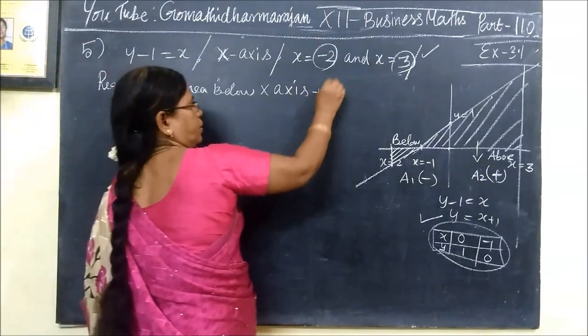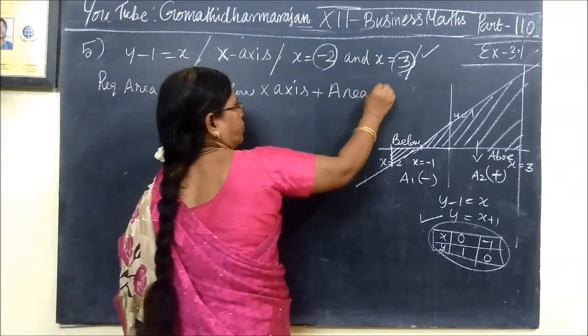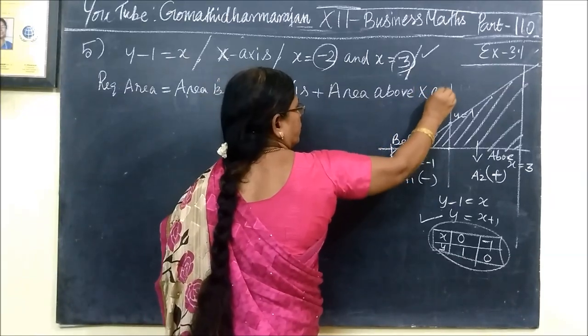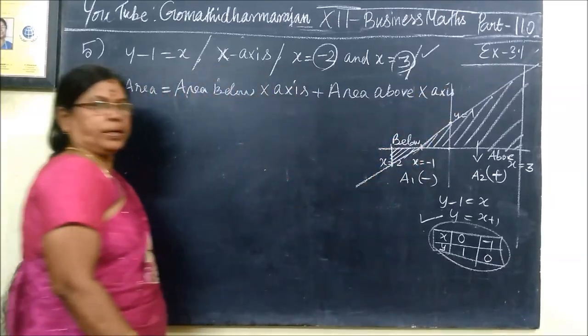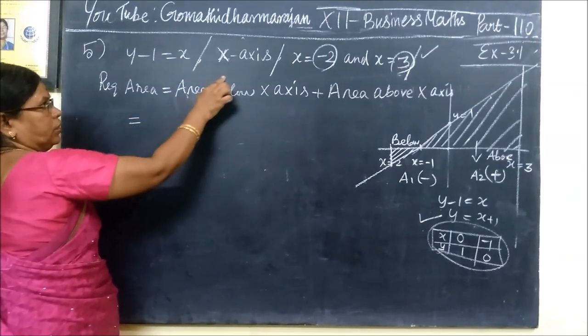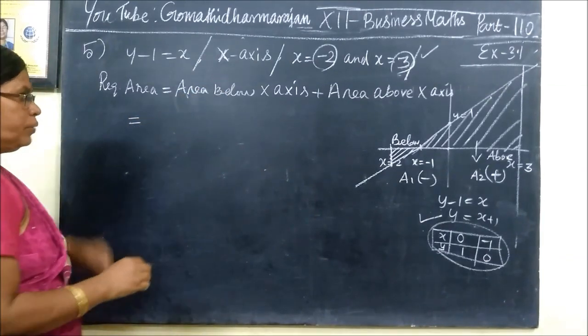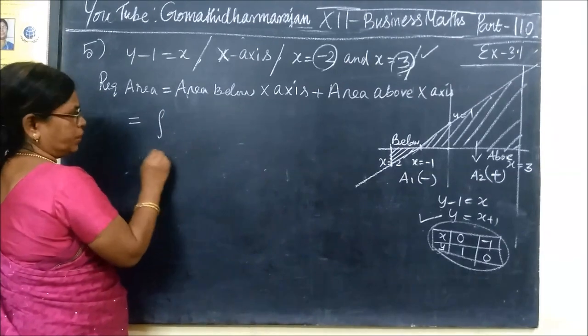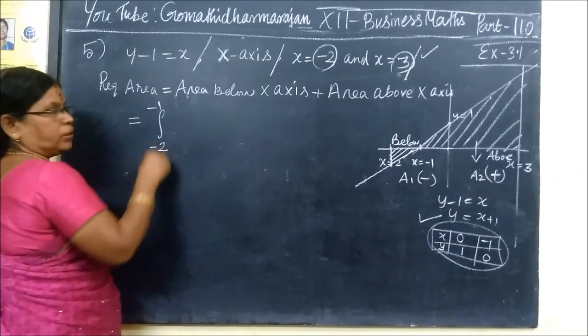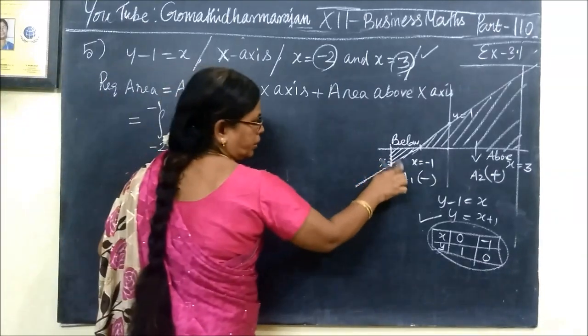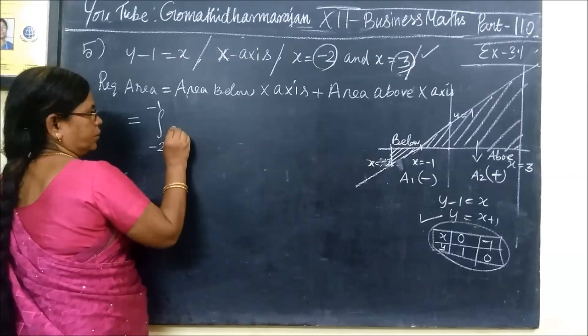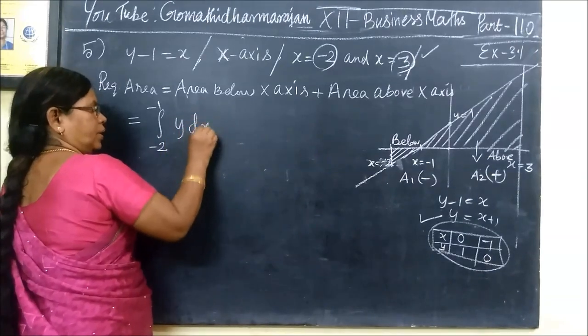Area below x-axis, then area above. Area below x-axis is equal to this. The limit, first limit is minus 2 to minus 1. Then y dx plus...